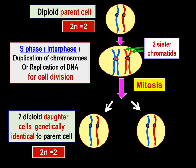The sister chromatids are attached at the centromere so that both do not get lost and to prevent them from being unequally distributed to the cells. To ensure equal distribution, one sister chromatid must go to daughter cell A and the other to daughter cell B. During mitosis, there will be a phase where the two sister chromatids separate and are found in two separate daughter cells. The same applies to the maternal chromosome, so the final products are two genetically identical daughter cells.